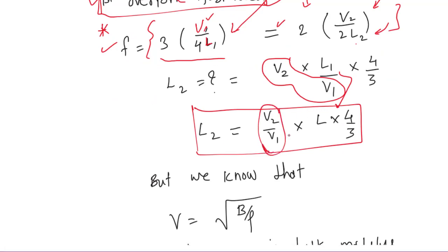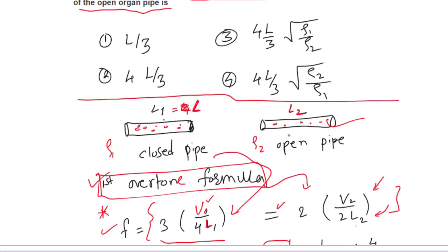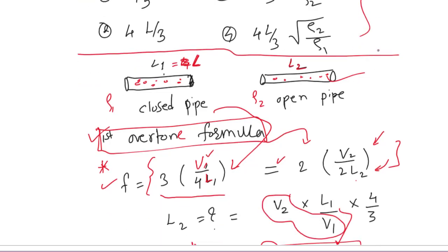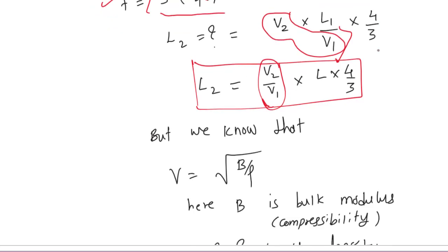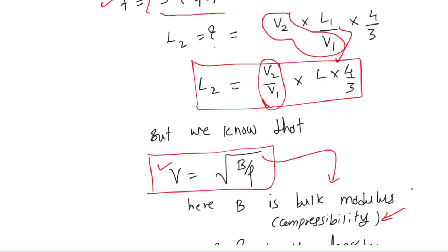If you look at these options there is no V₂ and V₁ involved, so we will have to get rid of V₂ divided by V₁. We know that velocity of sound in the medium is given by this formula: under root of B divided by ρ, where B is the bulk modulus which tells about compressibility and ρ is the density of the medium. In the question itself they have given that compressibility is same.